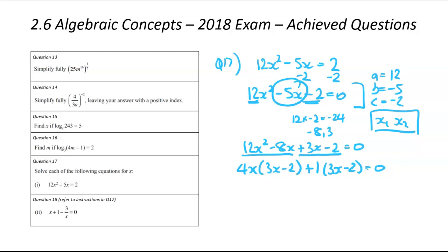The bracket's different. It probably means you've done a math error somewhere. We've got 4x plus 1, 3x minus 2. That is equal to 0. And I can now find my two solutions based on the equation.